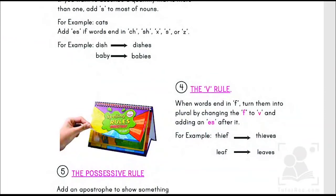Next we have the V rule. When words end in F, turn them into plural by changing the F to V and adding an ES after it. For example, such words as thief, chief, leaf.